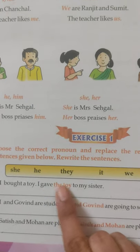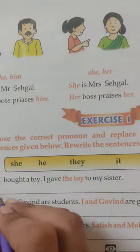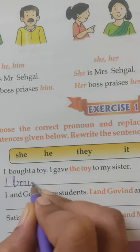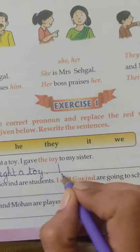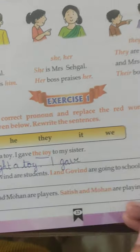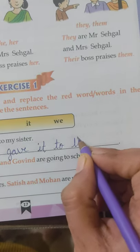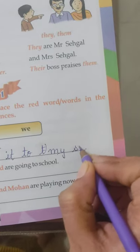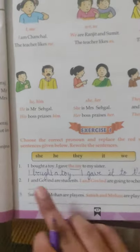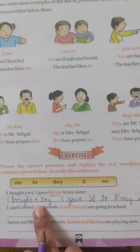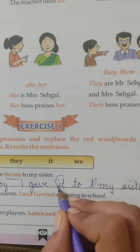I bought a toy. I gave the toy to my sister. We will write the first sentence the same. Now for the second sentence, 'the toy' — the correct word is 'it'. Why 'it'? Because a toy is non-living; it is a thing, and for a thing we use 'it'. So: I bought a toy. I gave it to my sister. The pronoun used here is 'it'.